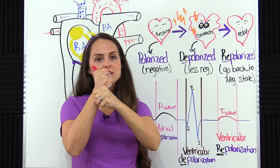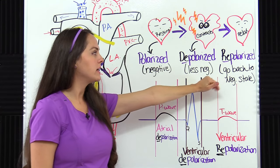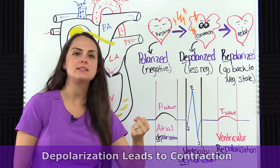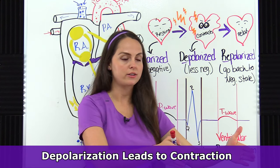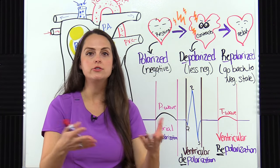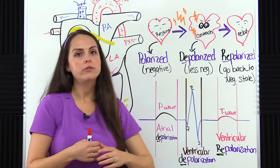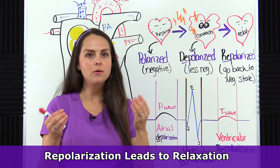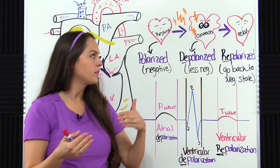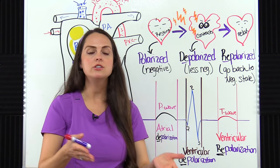The next step after contraction is relaxation. So after we have contraction, it relaxes — we get repolarization. It's going back to its negative state. What you want to take away from this is that depolarization leads to contraction. So whenever I'm saying atrial depolarization, I'm talking about atrial contraction — the contraction of the atria. Whenever I'm talking about repolarization, I'm talking about relaxation. And to help you remember that and keep those two straight, remember that the word "relax" starts with "re" and repolarization starts with "re."